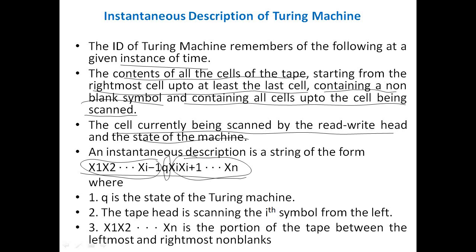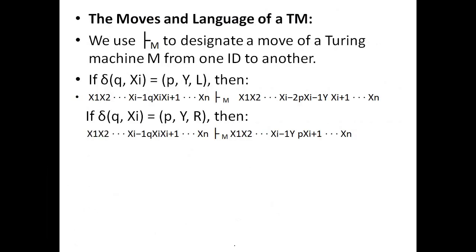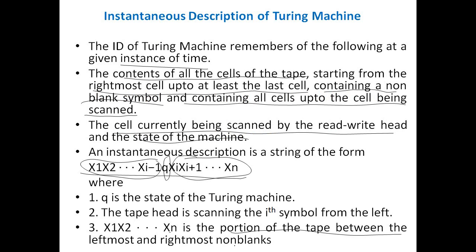Now, the tape head is scanning the i-th symbol from the left side. X1, X2, ..., XN is the portion of the tape between the leftmost and rightmost non-blank symbols. It is scanning from X1 to the i-th symbol, Xi. The head moves from left to right or right to left, scanning every symbol from the input tape, and when it finds the required symbol, it reads and processes it.